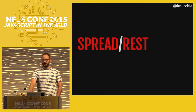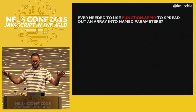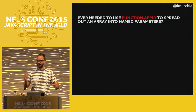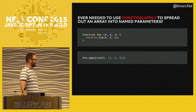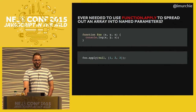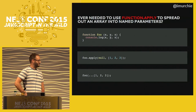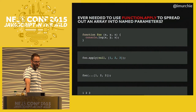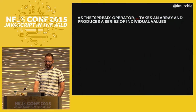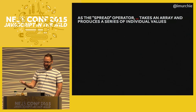Have you ever needed to use `Function.apply` to spread an array into named parameters? You have a function that takes three parameters, you have an array with three elements, and you want those elements to be the three arguments — something like that works but it's silly and if you're new to it, it makes no sense. You now have three little dots — the spread operator — which do the same thing. Both function calls will console.log `1 2 3` because `x`, `y`, and `z` will become 1, 2, and 3.